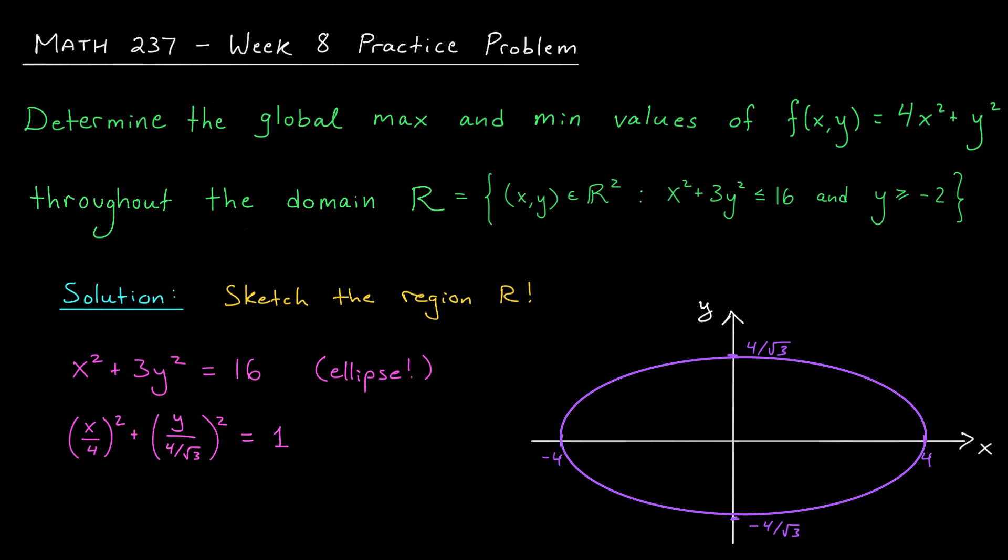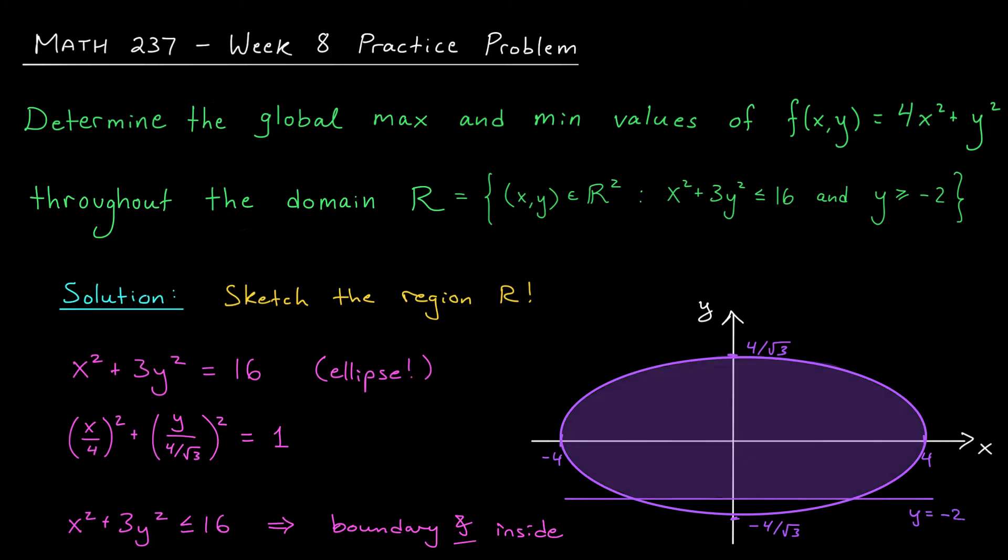But of course, we're not dealing with an equality. We're dealing with an inequality. x squared plus 3y squared is less than or equal to 16. The less than or equal to here is telling us to consider not just the points along the boundary of the ellipse, but also the points inside. In addition, we should only be considering the points in this region above the line y equals minus 2, which would be this portion here. So this is our region R.